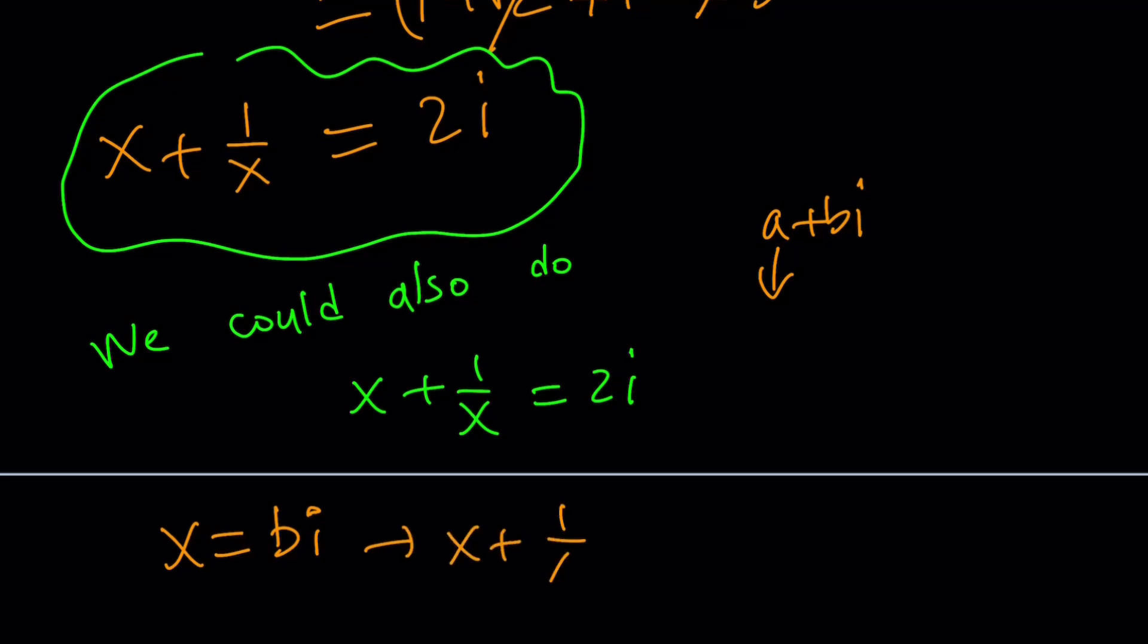Anyways, x plus 1 over x is just going to be bi plus, by the way, speaking of bi, a plus bi, hopefully you got to see my first video, which is kind of like an intro, channel introduction. I'm going to upload my first lecture video pretty soon, so make sure to keep an eye on it. The channel's name is a plus bi, and it's all about complex numbers. Anyways, a little bit of commercial break. Let's continue.